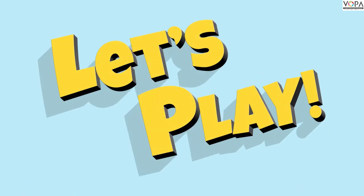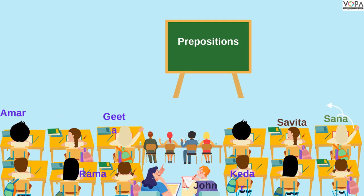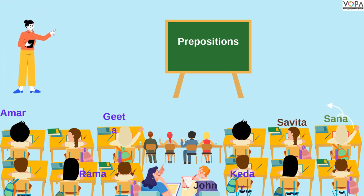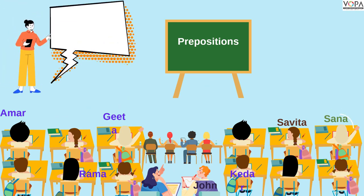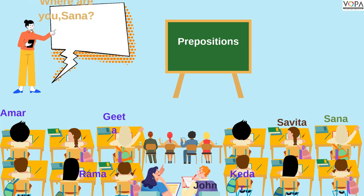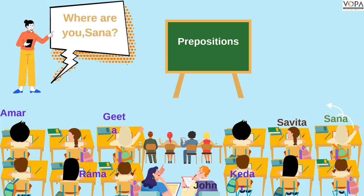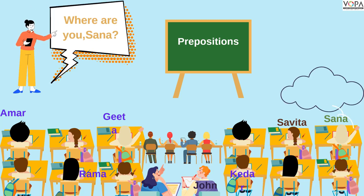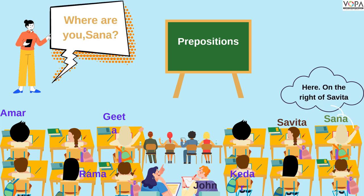Now let's play the game. I will ask some questions to my classmates. My first question is: where are you, Sana? Sana answered: I am here, on the right of Savita.